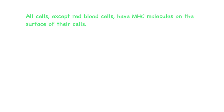All cells, except red blood cells, have major histocompatibility complex molecules on the surface of their cells — abbreviated as MHC. These MHC molecules are unique to each individual. This molecule allows your immune system, specifically T cells, to tell the difference between your own cells and cells that contain foreign particles. The function of MHC molecules is to bind to peptide fragments and display them on the cell surface, including fragments from the degraded cell itself or from pathogens that have invaded the cell.